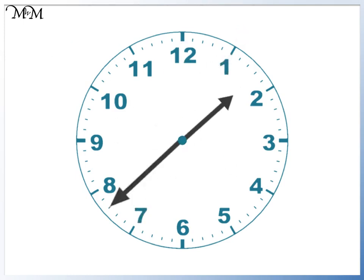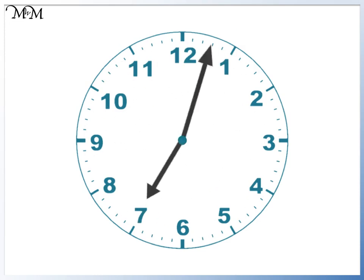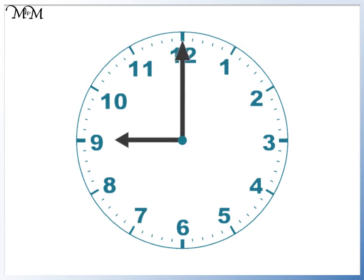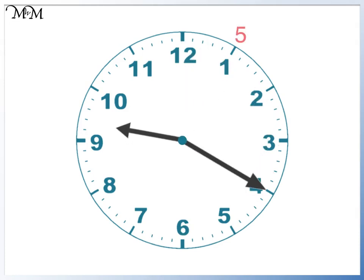This time we'll start at 9 o'clock. The minute hand moves round to 4. Remember, 4 lots of 5 equal 20, so we say that it is 20 past 9.